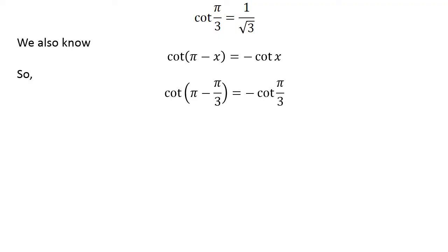So, cot(π - π/3) = -cot(π/3). As π - π/3 = 2π/3, we have cot(2π/3) = -1/√3.